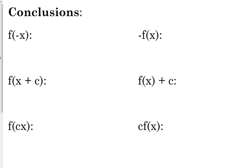So whenever we had a function and we were plugging in negative x — like with the absolute value, instead of the absolute value of x we had the absolute value of negative x — that one didn't actually change anything because of the symmetry of the function. But it did change things with e to the x and with the square root of x. When we changed from the square root of x to the square root of negative x, what happened to the graph? It flips it. So f of negative x flips over the y-axis, meaning all your positive x values are now on the negative side, and vice versa.